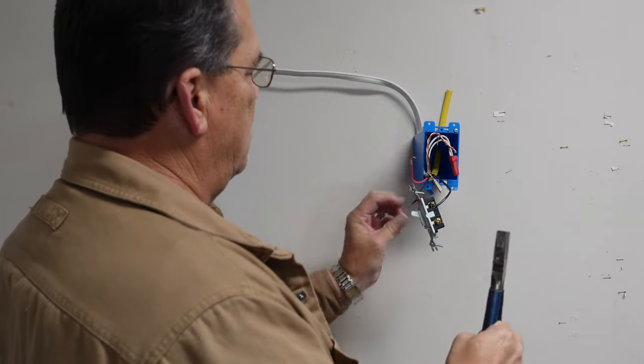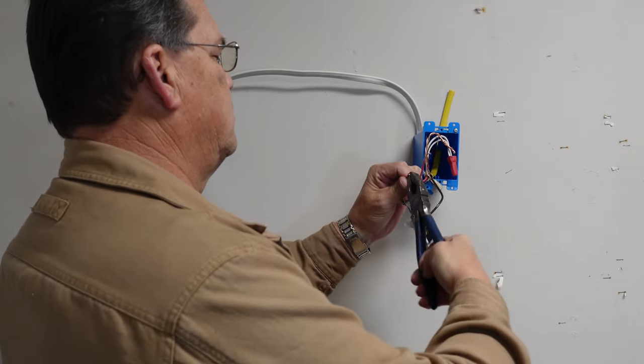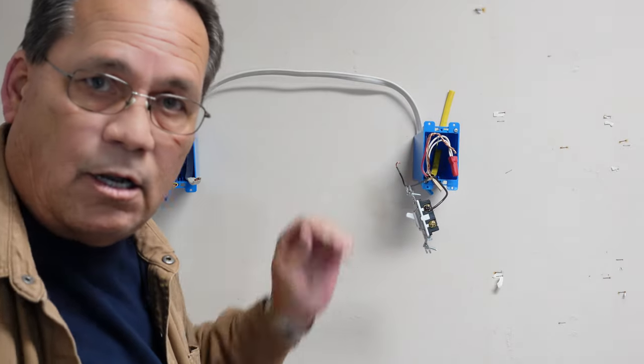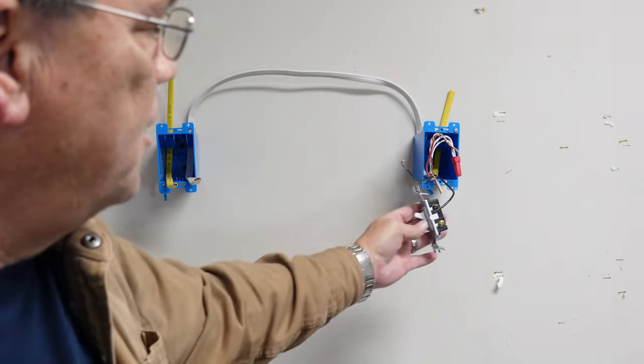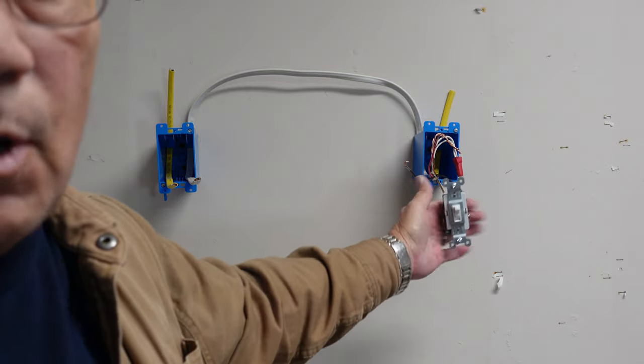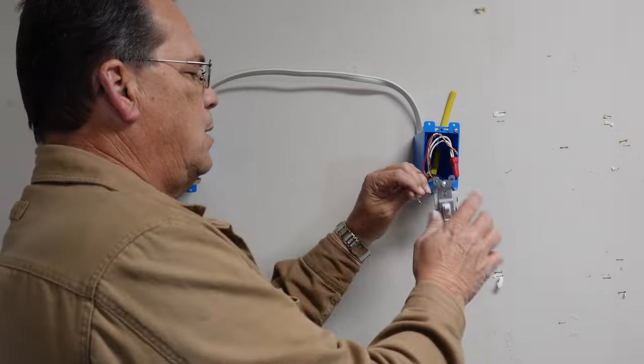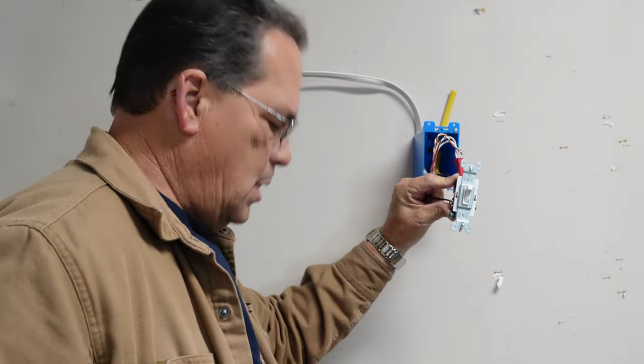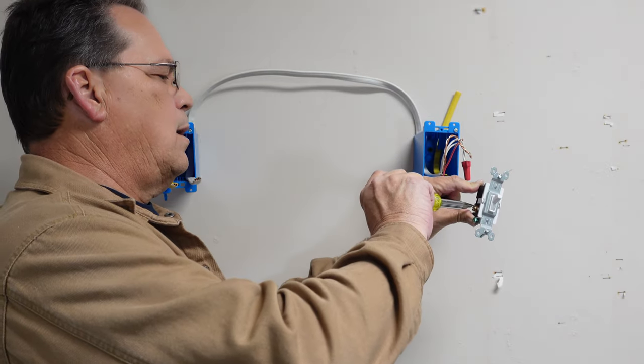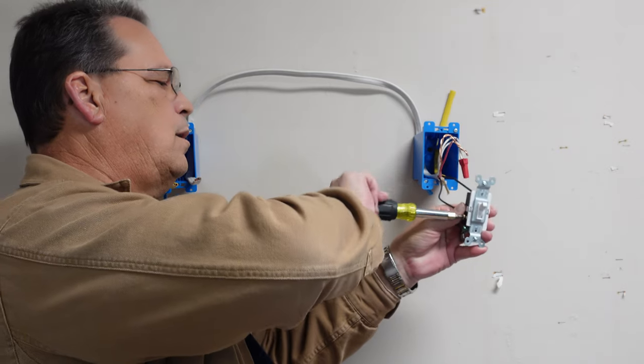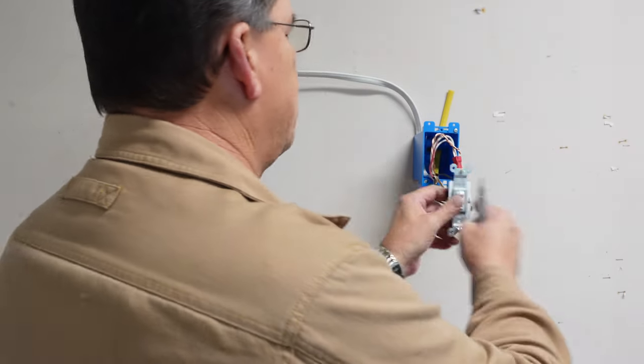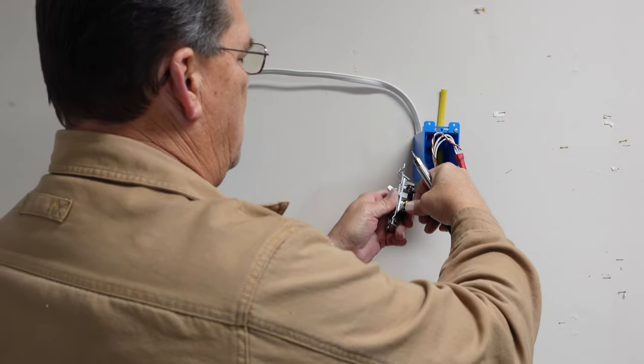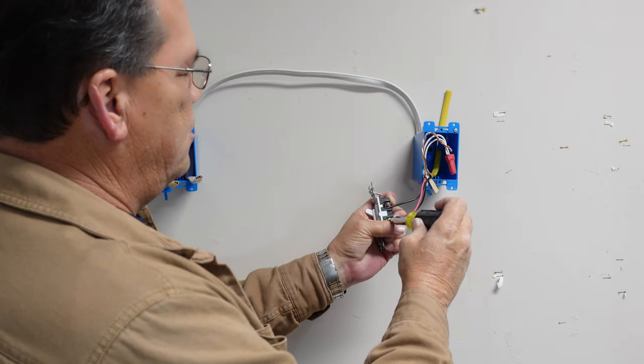So we're going to loop these two. As I said earlier, on your travel wire, when you're left with a black and a red wire, it doesn't matter on the switch which of these two wires go to which brass screw. Loop that around, tighten that one up. Bring your other one around, put it under the screw and secure that.